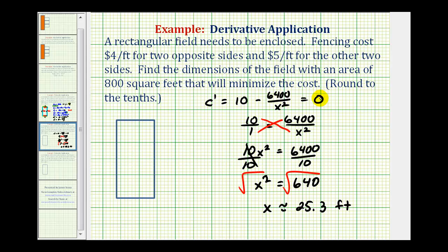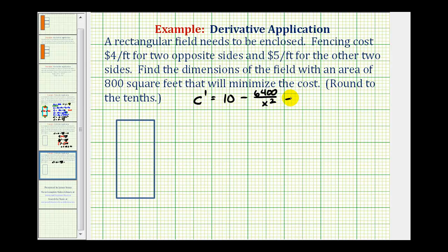Now, we need to keep in mind that we are trying to minimize the cost, and we only had one critical number to consider, and we often assume this is going to minimize the cost function. But remember, there are a couple of ways to make sure that at this x value, the cost would be minimized rather than maximized. One way is to check the sign of the second derivative at this x value. So let's take a moment and do that. Here was our first derivative, which we'll rewrite as 10 minus 6400x to the negative two, and we'll find the second derivative to ensure that at that x value we do have a minimum cost. The derivative of 10 would be zero.